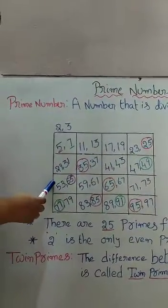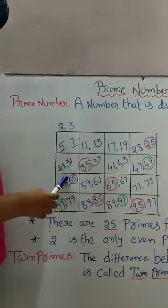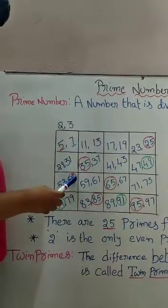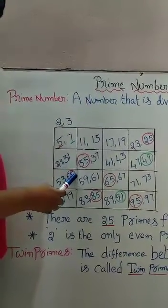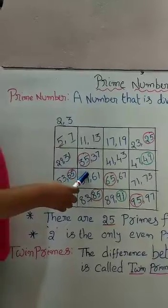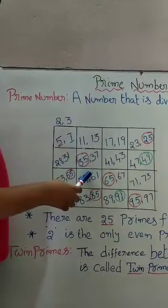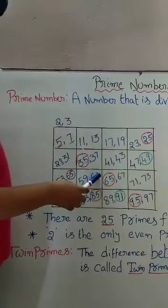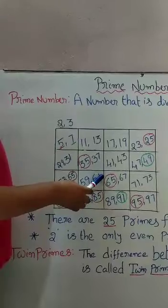49 plus 4 is 53. 53 plus 2 is 55. 55 plus 4 is 59. 59 plus 2 is 61.